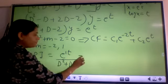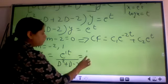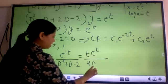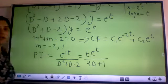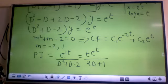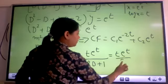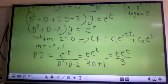And what is the concept? The moment denominator becomes 0, multiply numerator by t and differentiate denominator. And now you put d is equal to 1. So what you will get? t e^t and it will become 3. Correct?